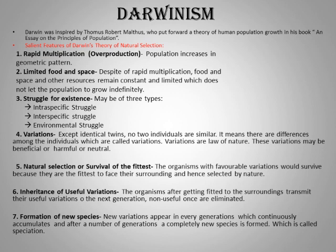Thomas Robert Malthus put forward a theory on human population growth in his essay on the principles of population. Malthus stated that population grows geometrically when unchecked, whereas the means of sustenance — food, space — grow only arithmetically. Naturally, an imbalance occurs: with too much population growth and limited resources, people die due to hunger, epidemics, earthquakes, and floods, restoring the normal population size. This population crash is called catastrophic control, and these factors were called positive checks by Malthus.